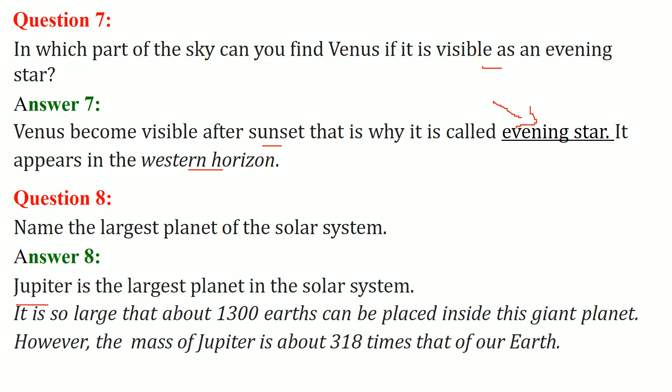Jupiter is the largest planet in the solar system. In fact, it is so large that about 1300 Earths can be placed inside this giant planet. If you take Earth multiplied by 1300, then it will be equivalent to Jupiter. But the mass of Jupiter is about 318 times that of our Earth.